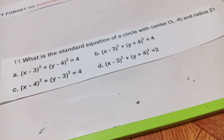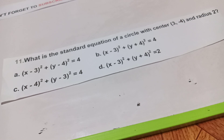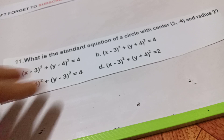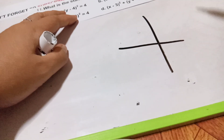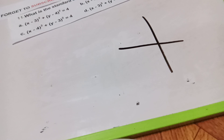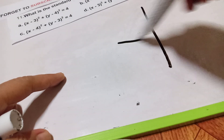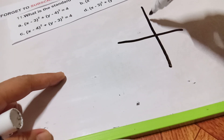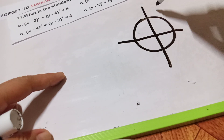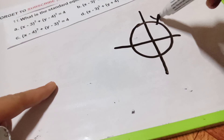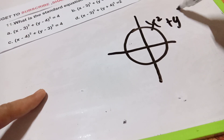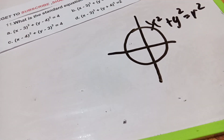The given is: center (3, 4) and radius of 2. What will be the formula for the circle? We know that if the circle is centered at the origin on the x and y axis, we use x squared plus y squared equals r squared.